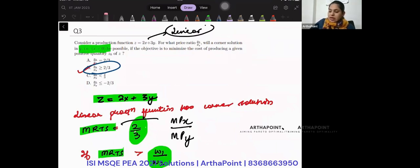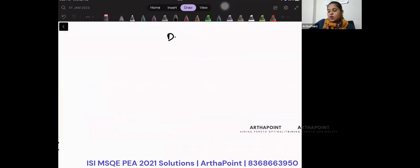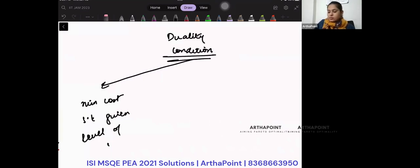Suppose instead of minimizing cost, your objective is to maximize output or production. It is the same thing. We know in microeconomics that this is called the duality condition. That means you can minimize cost subject to a given level of output.